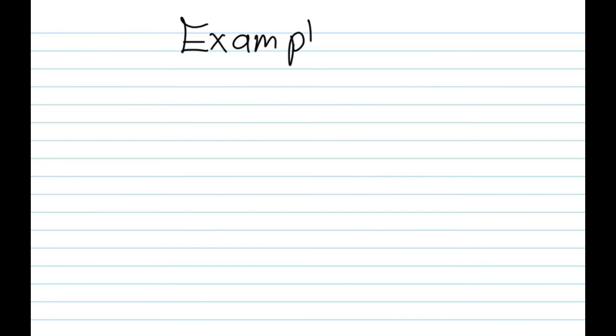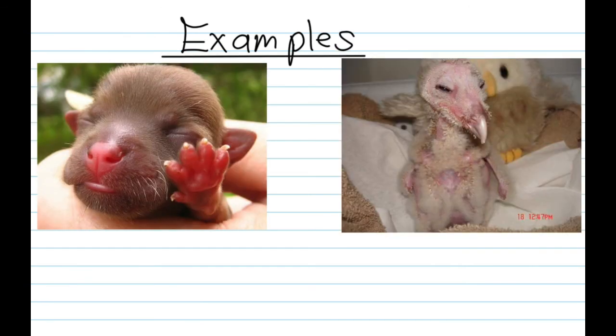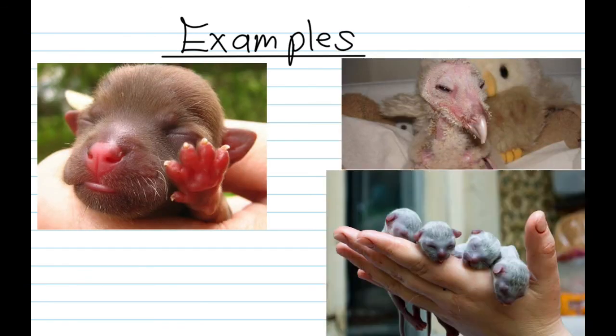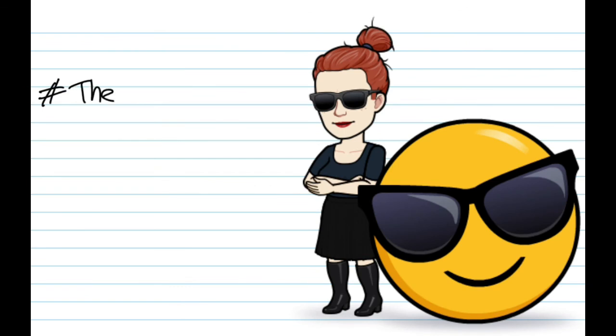Examples here include things like puppies, owls, kittens, and humans. And as you can see from the pictures, they are pretty helpless. Thank you for visiting the chaotic classroom — see you next time.